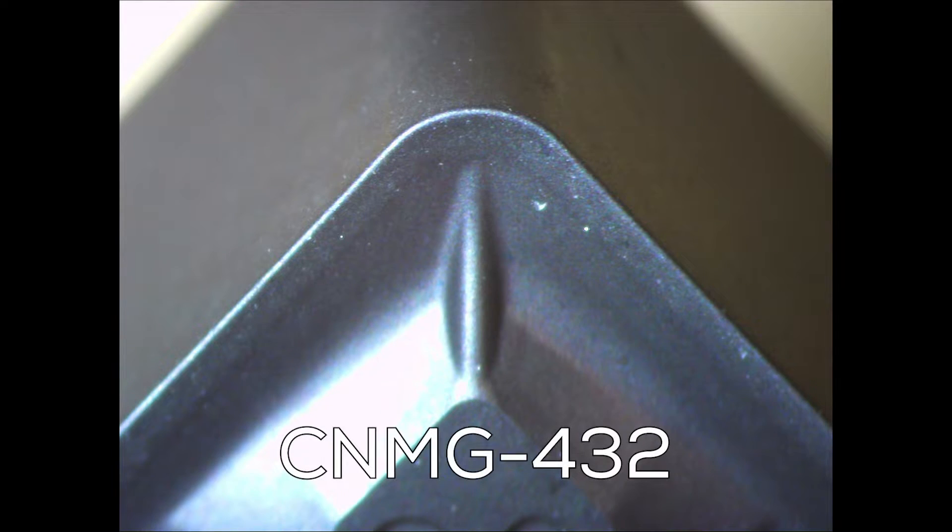If we look at the cutting insert under a microscope, we can start to get an idea of what's happening here. You can see that the tip of the insert has a radius. This is called the nose radius. And the last number of that CNMG 432 insert size, so the two, corresponds to the actual radius of the nose, which is 31 thousandths.